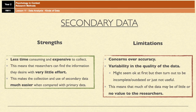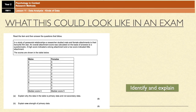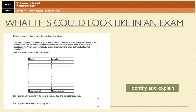So those are just a couple of strengths and limitations of these two types of data. Before we finish off, let's have a quick look at what this could look like in an actual exam. Your first question is a bit of an identify-and-explain, and it's really simple — they just want you to explain why the data in the table is primary data and not secondary data. You just point out that the data is being collected firsthand by the researcher. It's only two marks, so you don't need too much detail. Then part B is a generic evaluation question: explain one strength of primary data, worth three marks — name the strength and explain why it is a strength.